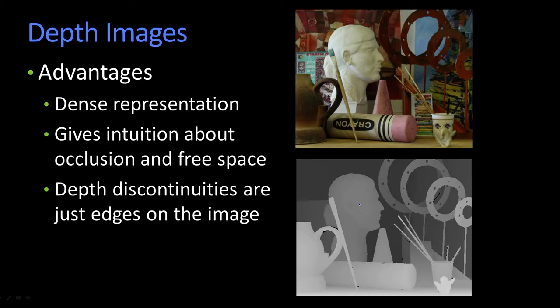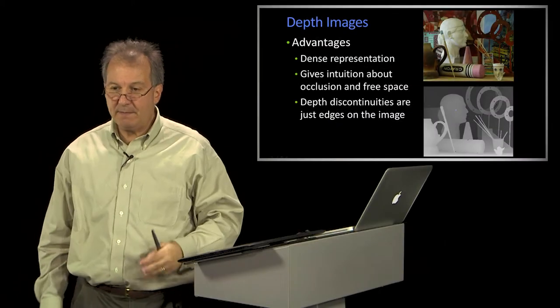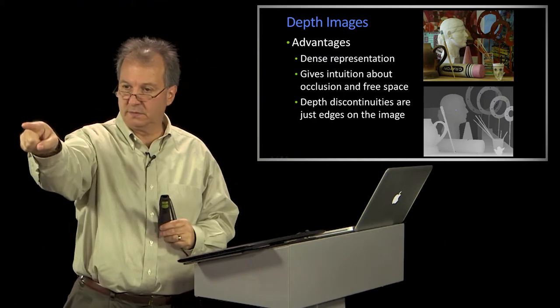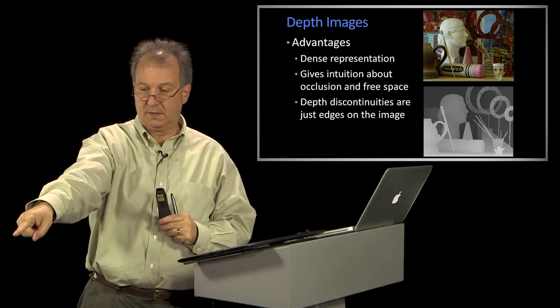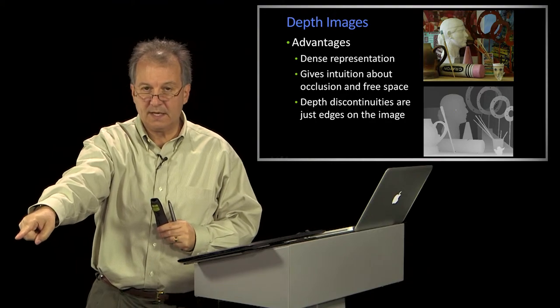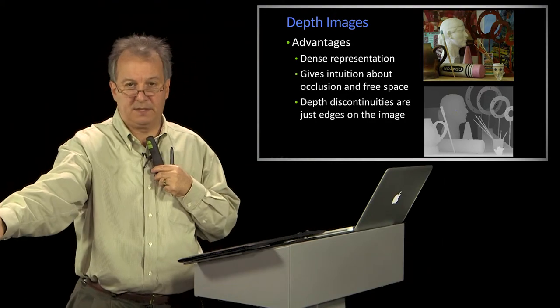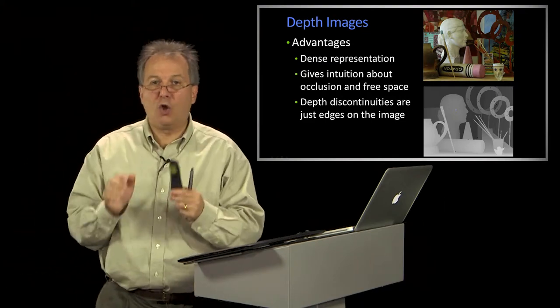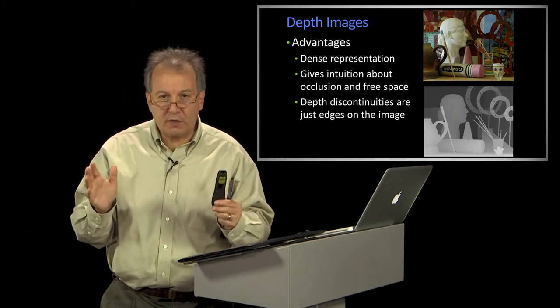Something that's a little more subtle is that a depth image not only tells you it's two meters from here to that table, it also tells me that between here and that point is free space. So it doesn't just represent the surface, it also represents by default, if you will, that there is no stuff between here and there, right?